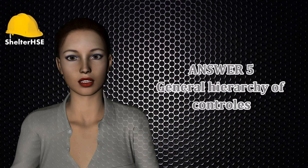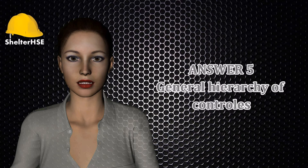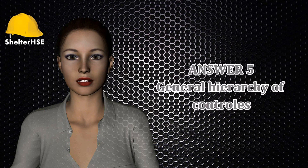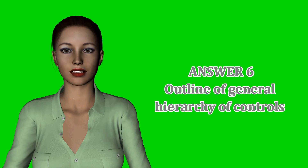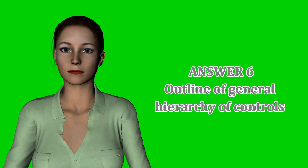Question six: Outline with examples the standard hierarchy that should be applied with respect to controlling health and safety risks in the workplace. Eliminating the risk: once the hazard has been eliminated, the potential for harm has gone. Example: disconnecting the electric power line.